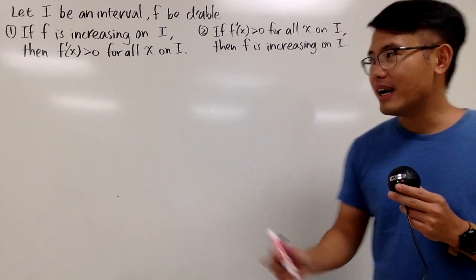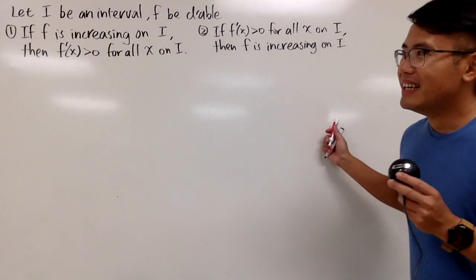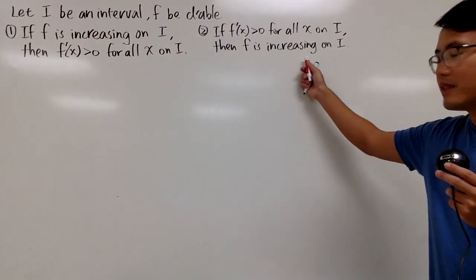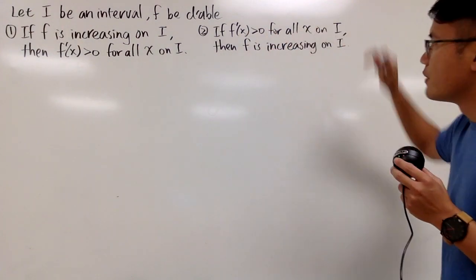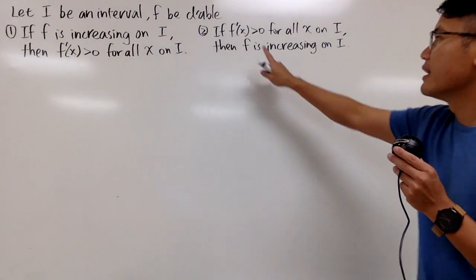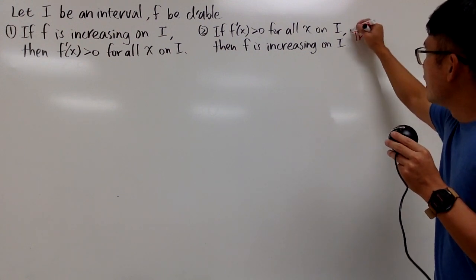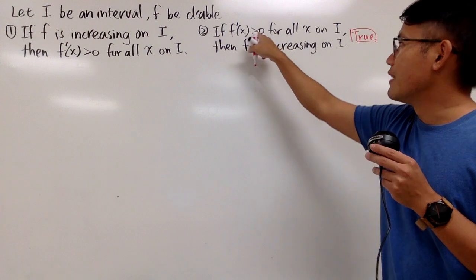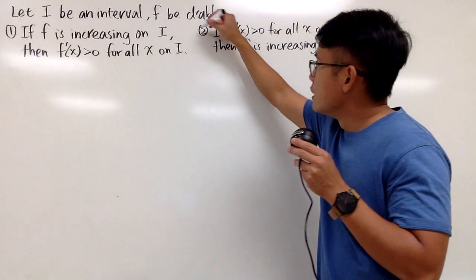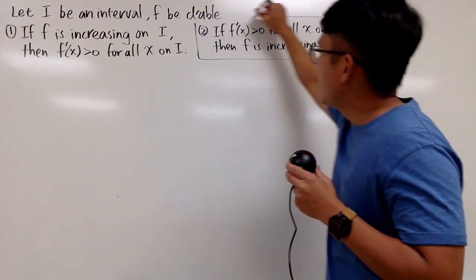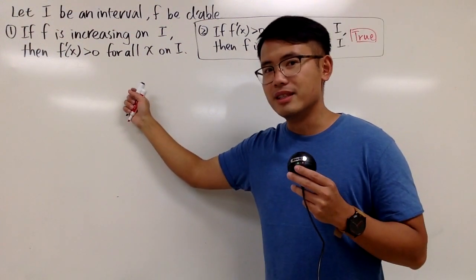Please pause the video and think about them first. If the first derivative is positive on a certain interval, then we can actually conclude that f has to be increasing on that interval. So this right here is true — and you can also say strictly increasing because we have the first derivative being positive. I'll just box this, and maybe I can prove it later on in another video.